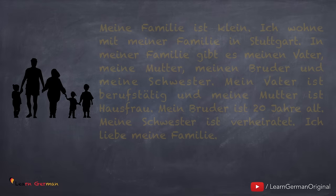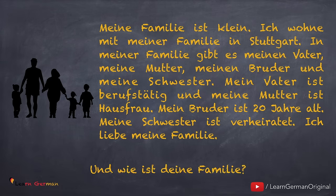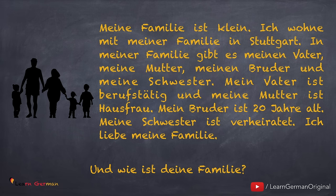Now let's see how to talk about a family as an example. Here is a text: Meine Familie ist klein. Ich wohne mit meiner Familie in Stuttgart. In meiner Familie gibt es meinen Vater, meine Mutter, meinen Bruder und meine Schwester. Mein Vater ist berufstätig und meine Mutter ist Hausfrau. Mein Bruder ist 20 Jahre alt, meine Schwester ist verheiratet. Ich liebe meine Familie. Und wie ist deine Familie?